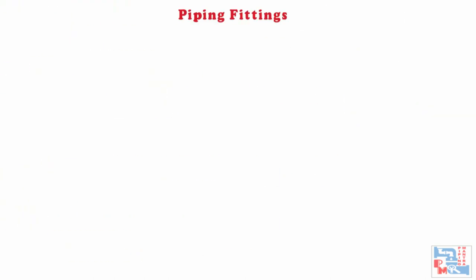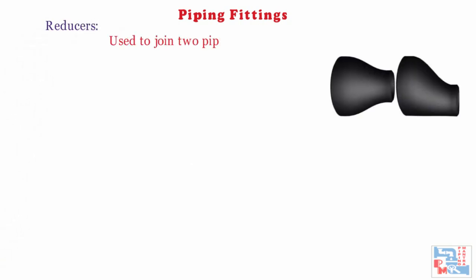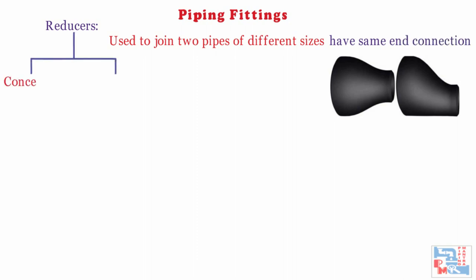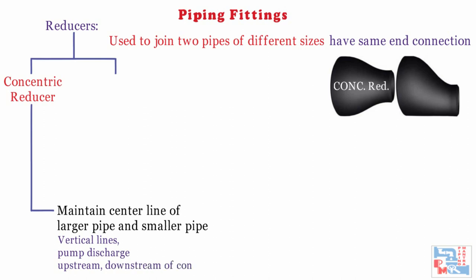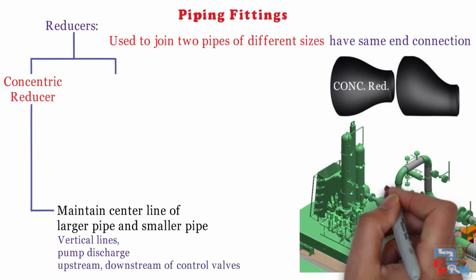Reducers are widely used fittings to join two pipes of different sizes having the same end connection. There are two types. First is concentric reducer, commonly denoted as CONC reducer in isometrics and P&IDs. It is used when we need to maintain the same centerline elevation for both the larger and smaller pipe. It is used in vertical lines, pump discharge, and upstream and downstream of control valves in some cases.